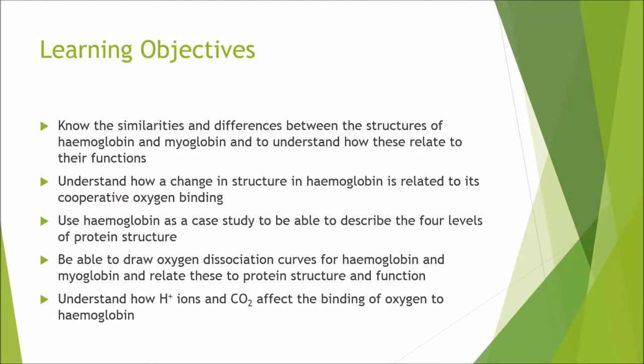To understand how a change in structure in Hemoglobin is related to its cooperative oxygen binding. To use Hemoglobin as a case study to describe the four levels of protein structure. To be able to draw oxygen dissociation curves for Hemoglobin and Myoglobin and relate these to protein structure and function, and to understand how hydrogen ions and carbon dioxide affect the binding of oxygen to Hemoglobin.